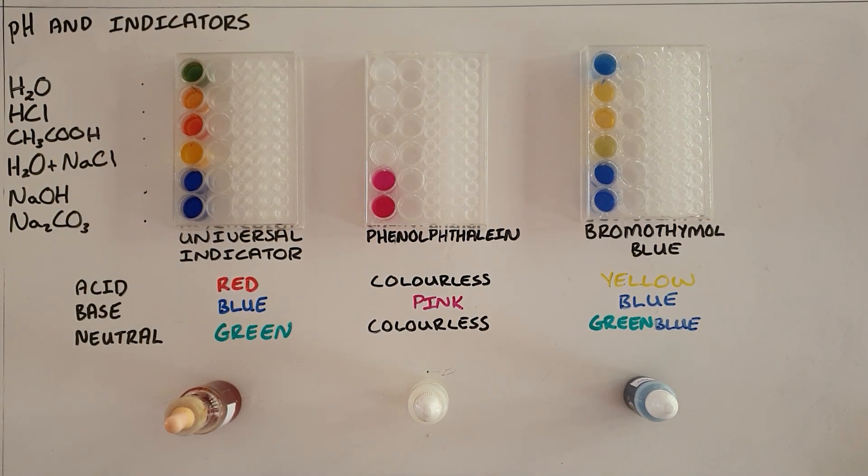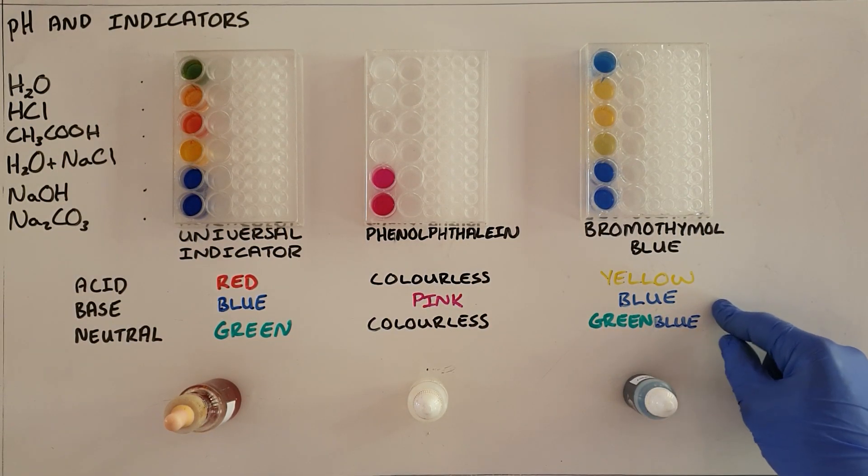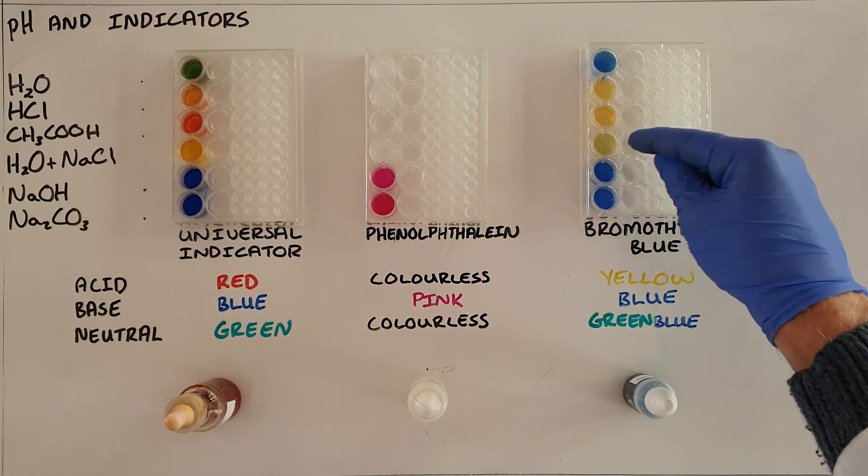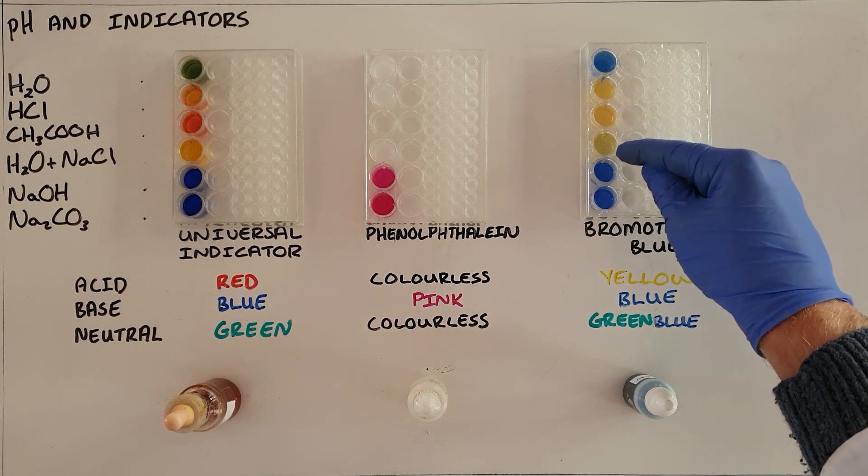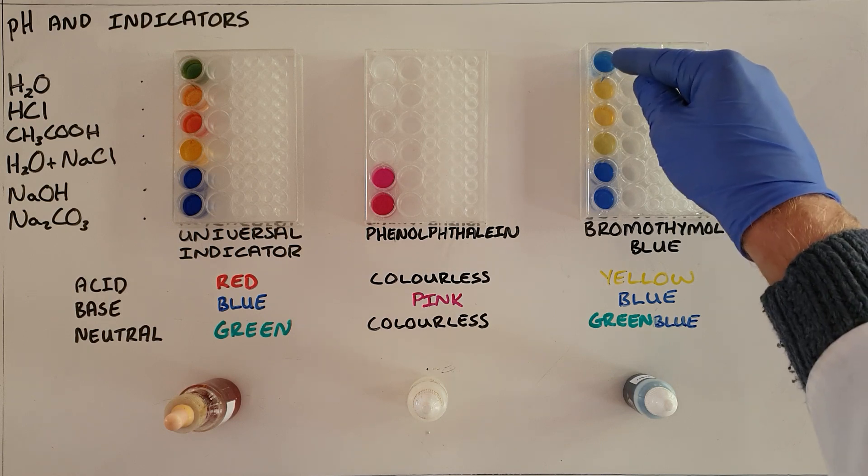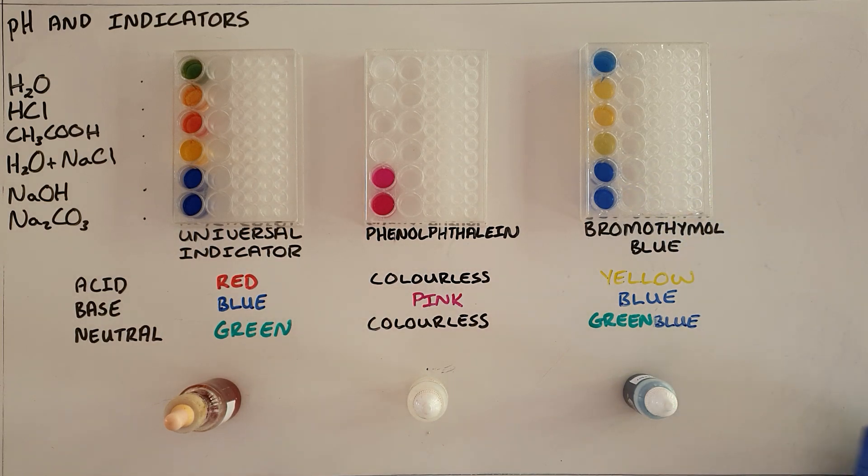So we can see that the bromothymol blue is quite sensitive when it comes to distinguishing the difference between neutral substance and a base. We can see that the salt water has gone a yellowish green color and the blue that is shown in the water is very different to the blue that is shown in these two bases. But again this is not a perfect experiment, the combo plate can very easily become contaminated.